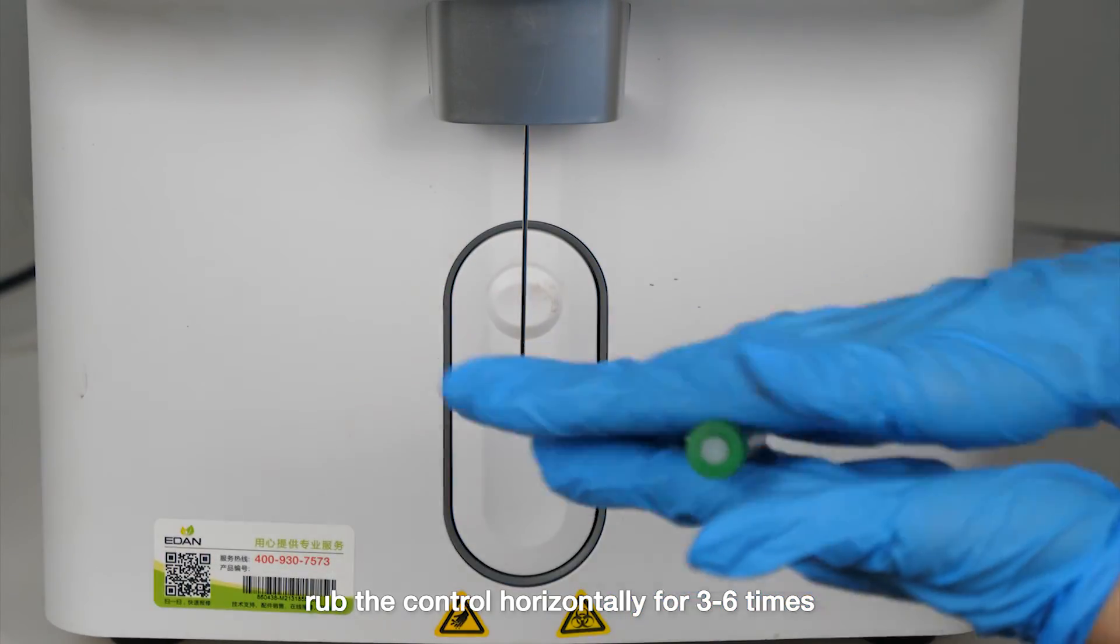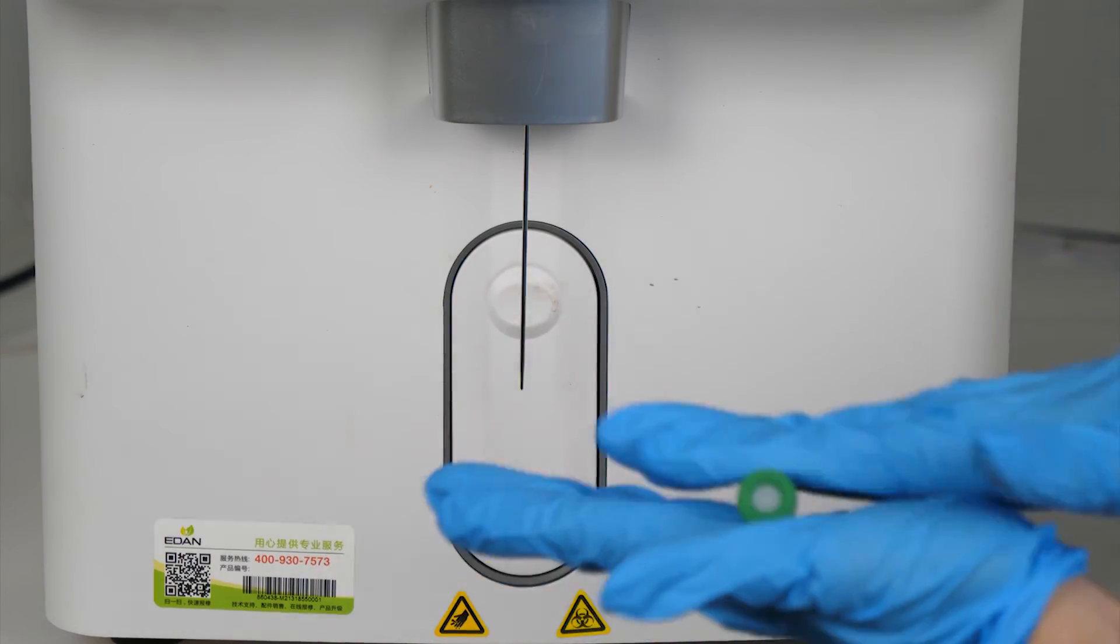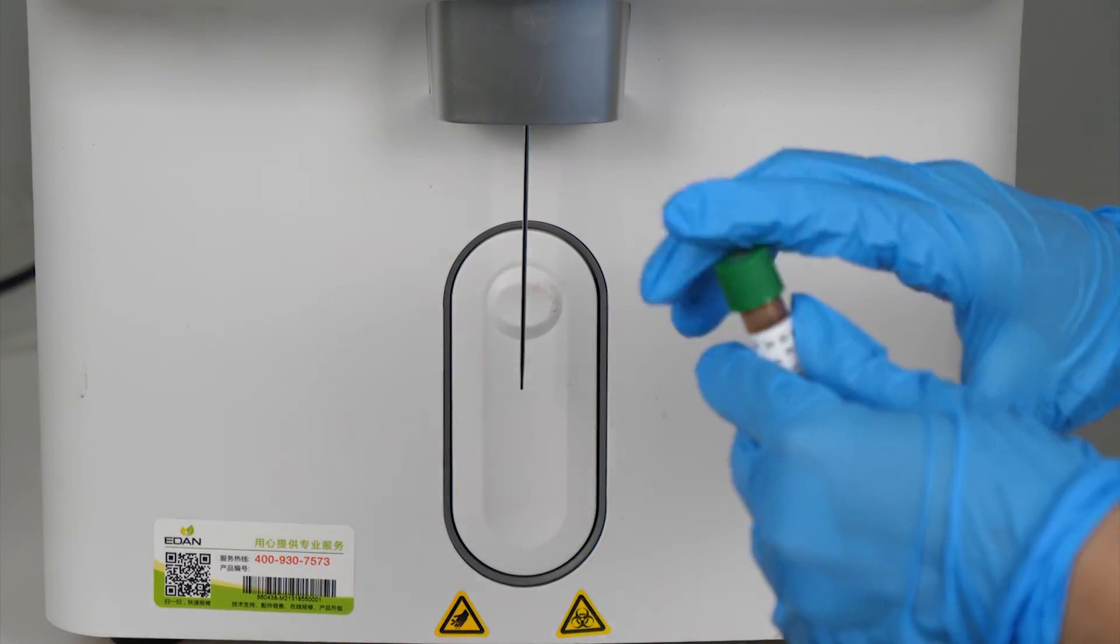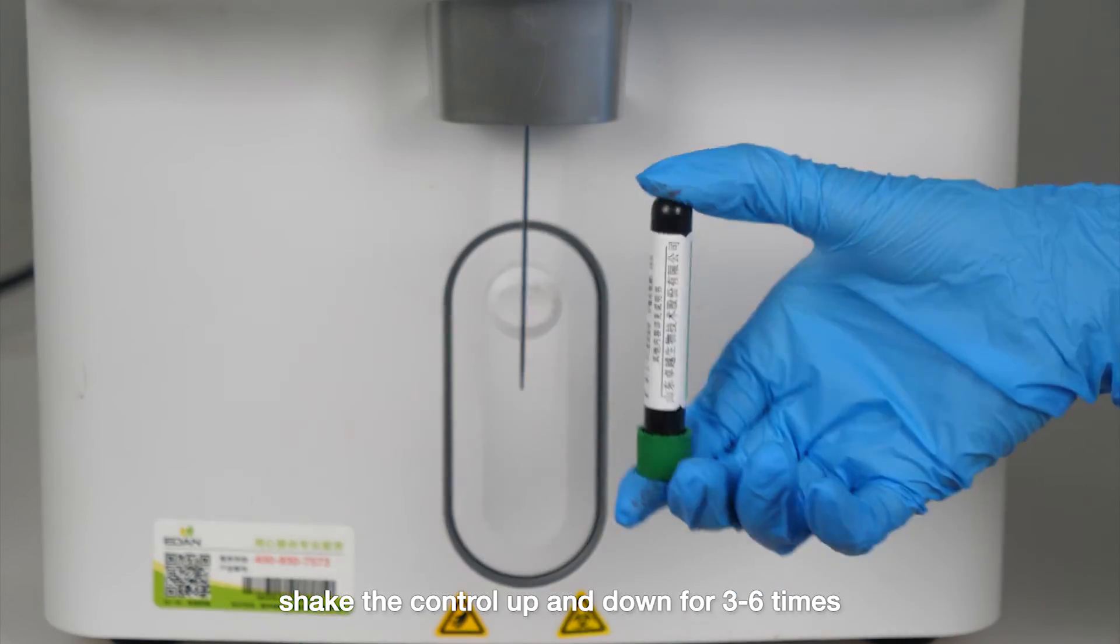Rub the control horizontally for 3 to 6 times. Shake the control up and down for 3 to 6 times.